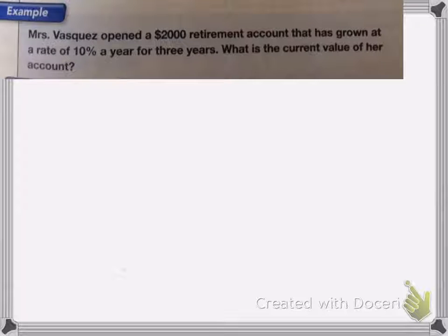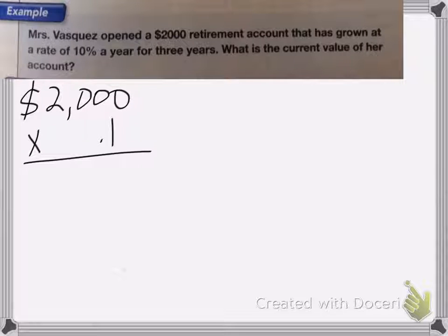So we have Mrs. Vasquez opened a $2,000 retirement account that has grown at a rate of 10% per year for three years. It wants to know the current value. So to figure that out, I'm going to take the amount she deposited, that's $2,000, and multiply it by 10% or 0.1, which is the decimal equivalent.